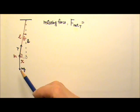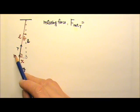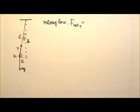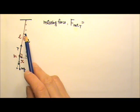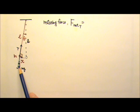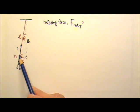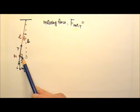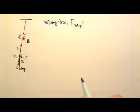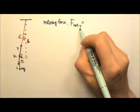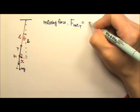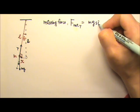The restoring force comes from mg's component that is tangent to the circle. If this angle is theta, then this angle here is also theta. So mg's component that is tangent to the circle is the sine component, mg sine theta. So the restoring force along the tangent direction is mg sine theta.